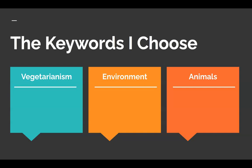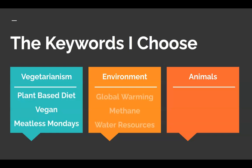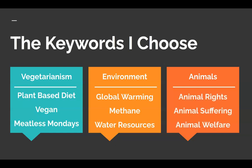So for vegetarianism, we might try 'plant-based diet,' we might think of 'vegan,' and maybe 'meatless Mondays.' Then we can do this for environment and animals as well. Now we have nine synonyms listed here and three main keywords. We can try picking any of these and combining them to do a search. We could choose 'vegan and methane' or 'vegetarianism and animal rights' and see what different results we can get from the different combinations.